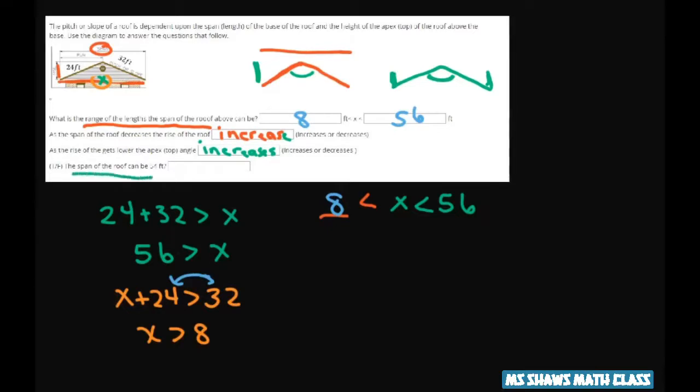The span of the roof can be 54 feet. Well, yes, because 54 is in between 8 and 56. So that's going to be true.